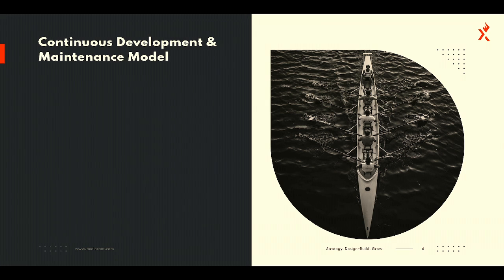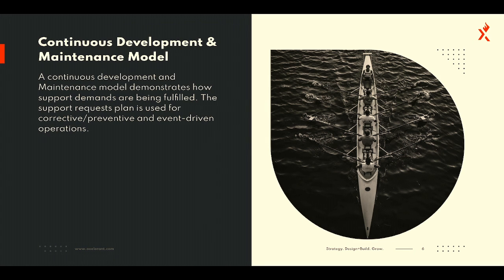In the continuous maintenance model we provide all services requested by the client. It comes into role when the warranty period finishes, and then we start working on things related to support. The first feature is flexible continuous delivery: if you're working in the sprint model you have to stick to the timeline, but in the support model it's completely flexible — we work in Kanban, making your release structure more flexible to deliver on time.